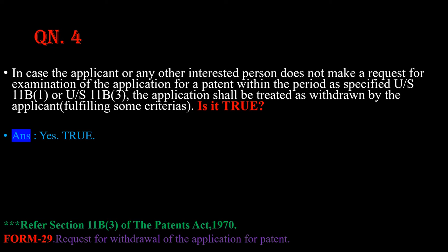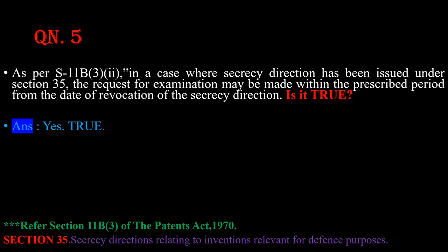Form 29 is request for withdrawal of the application for patent. Question number 5: As per section 11b subsection 3 clause 2, in a case where secrecy direction has been issued under section 35, the request for examination may be made within the prescribed period from the date of revocation of the secrecy direction. Is this statement true? The answer is yes, the statement is 100% true. Please refer section 11b subsection 3 of the Patents Act 1970. Section 35 is secrecy directions relating to inventions relevant for defense purposes.